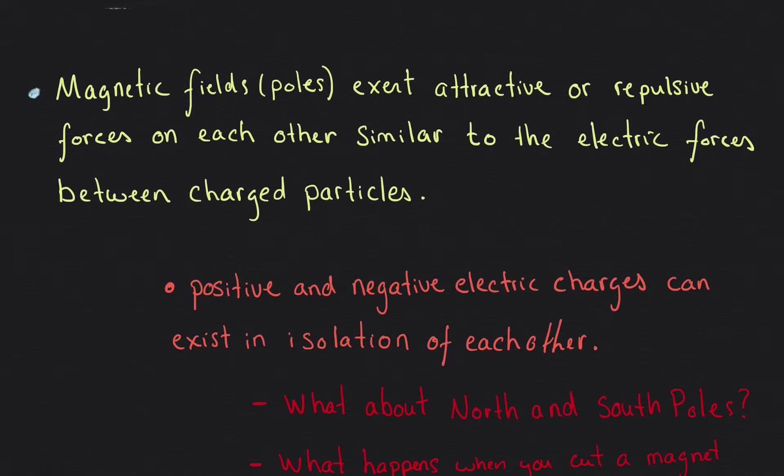The second point says that magnetic fields, so you can think of them as poles right now, will exert an attractive or repulsive force on each other. And this is very similar to when we thought about the electric forces on charged particles.